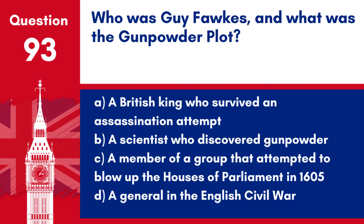Question 93. Who was Guy Fawkes, and what was the Gunpowder Plot? a. A British king who survived an assassination attempt. b. A scientist who discovered gunpowder. c. A member of a group that attempted to blow up the Houses of Parliament in 1605. d. A general in the English Civil War. Answer: c. Guy Fawkes is most famously associated with the Gunpowder Plot, an attempted assassination of King James I and Members of Parliament by blowing up the Houses of Parliament.